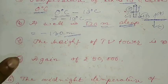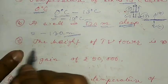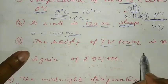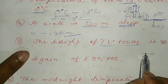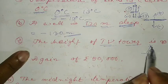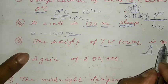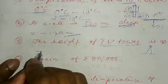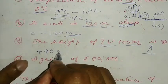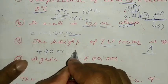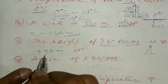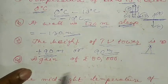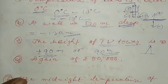We move to question number C: the height of a TV tower. The TV tower is 90 meters. So the level of land should be represented accordingly.